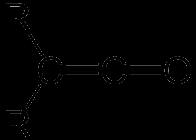Ketenes can be prepared from acyl chlorides by an elimination reaction in which HCl is lost. In this reaction, a base, usually triethylamine, removes the acidic proton alpha to the carbonyl group, inducing the formation of the carbon-carbon double bond and the loss of a chloride ion.